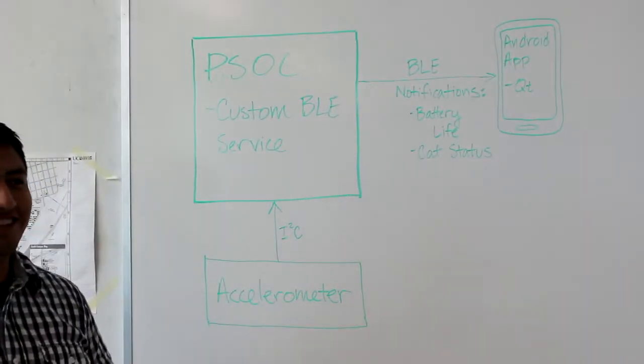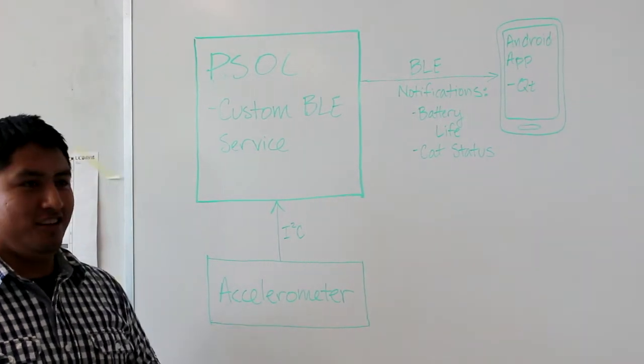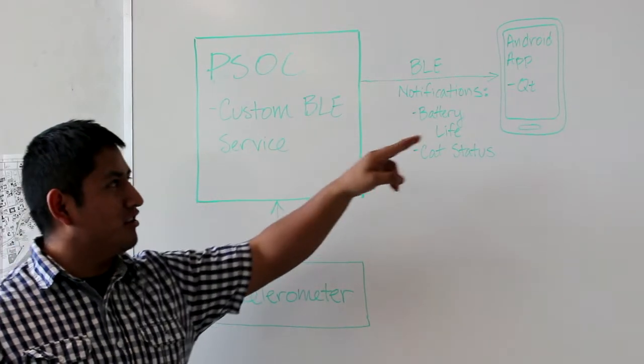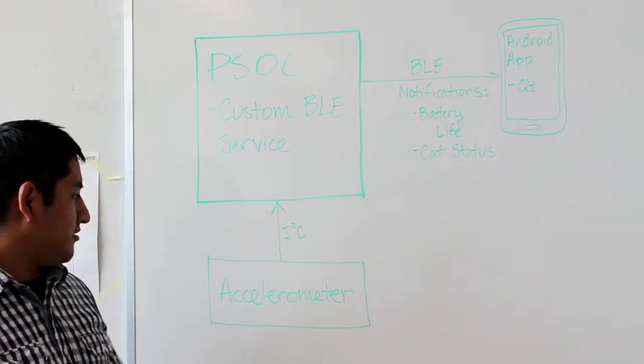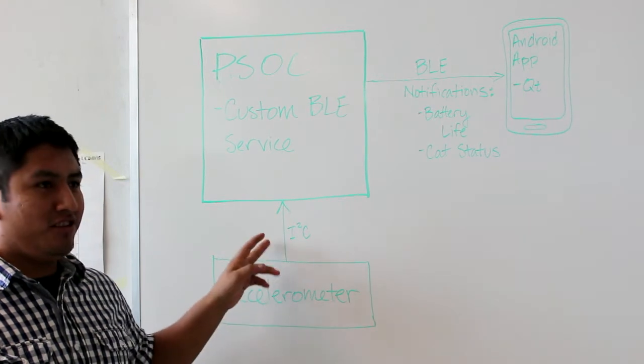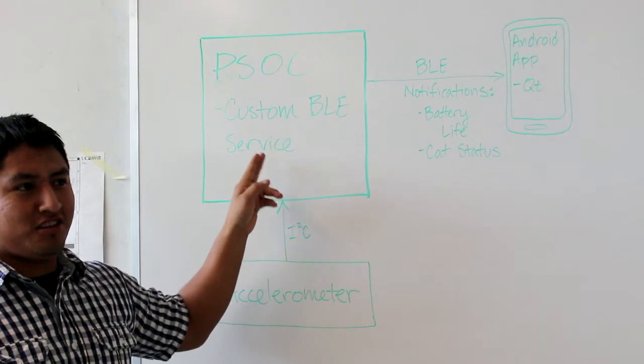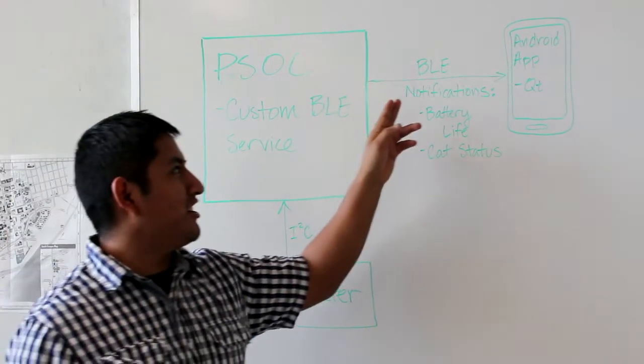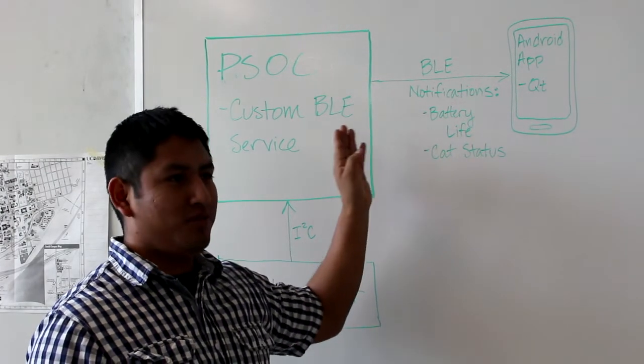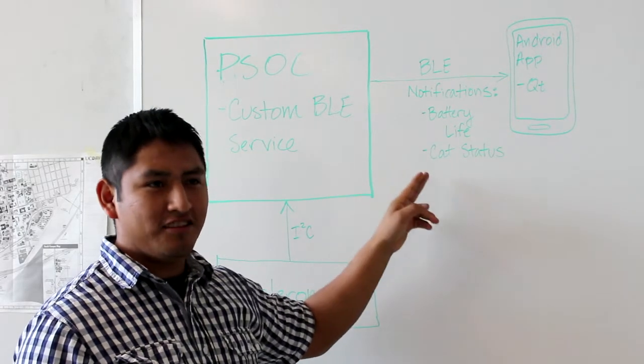The overall goal of our project is to monitor the behavior of a pet, in our case a cat. We do this by using PSOC, BLE, Android app, QT creator, and an accelerometer. We have an accelerometer that sends in data through I2C to the PSOC, and we have a custom BLE service that sends notifications through Bluetooth to the Android phone, and it displays a battery life in percentage and the cat status.